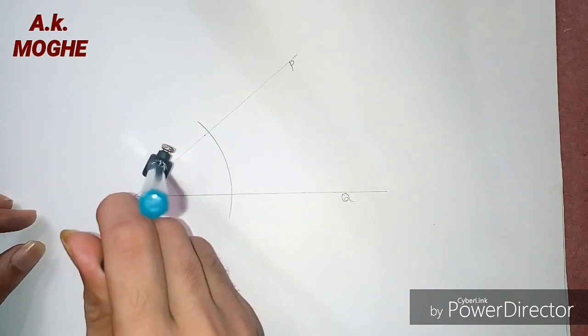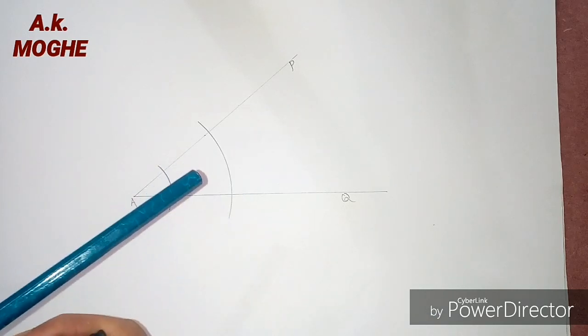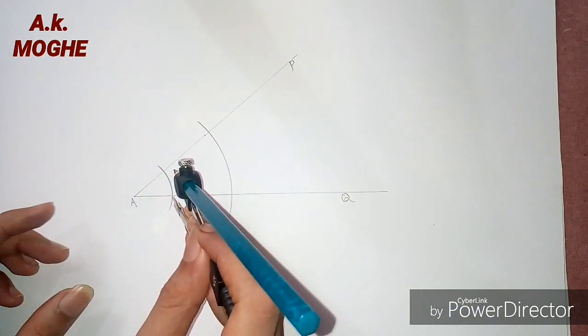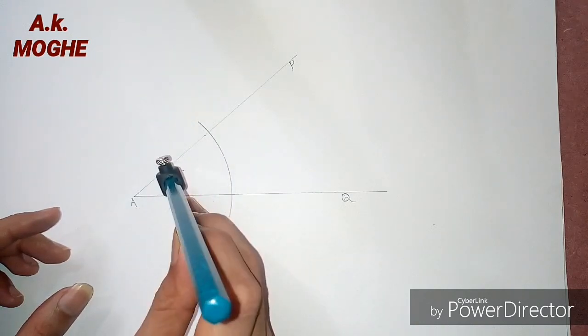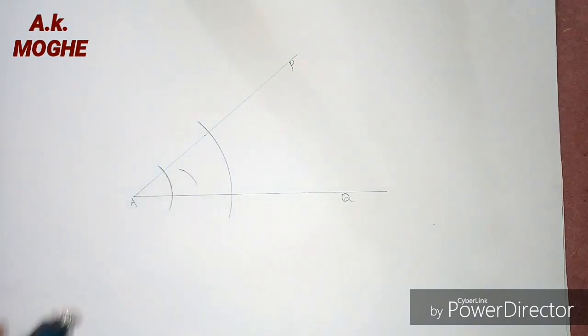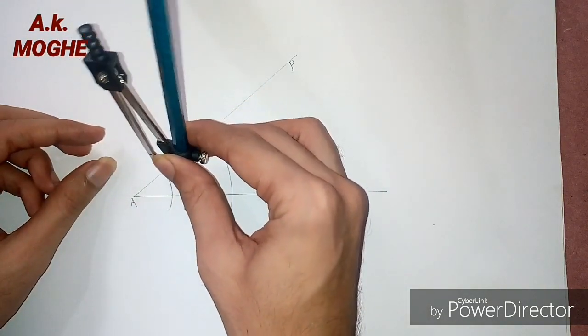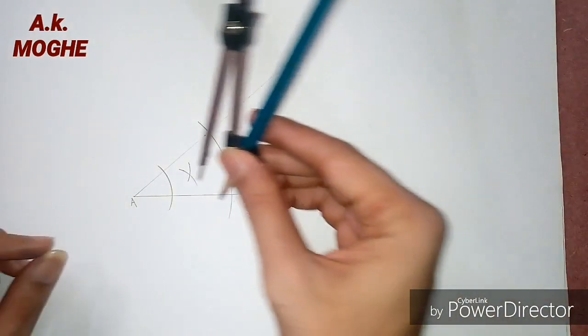Then here, bisect angle A into equal parts. How to bisect an angle? The procedure we know is we need to mark two arcs inside the angle, and the intersection point of the arc needs to be joined at point A.